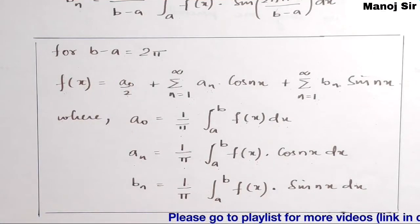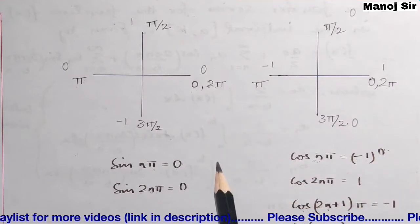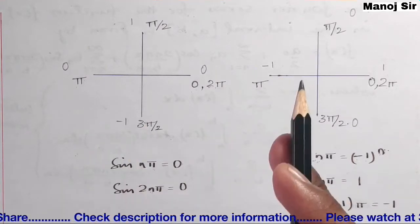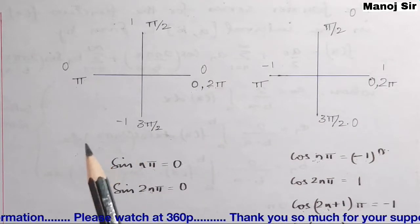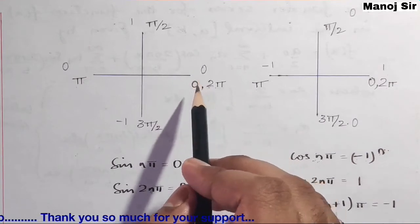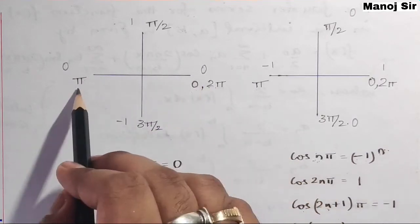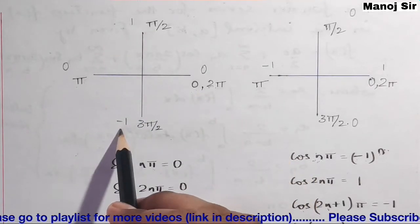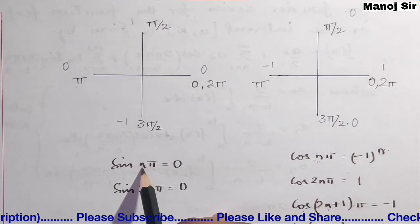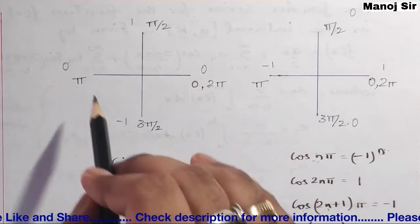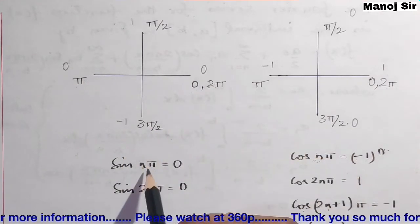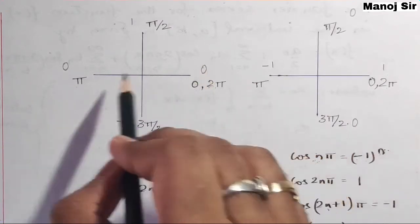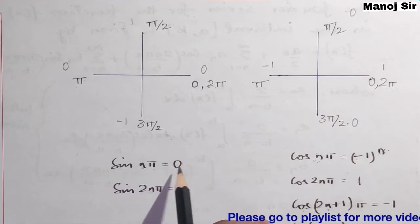Now let us discuss some standard results. First: sin(nπ) = 0 and sin(2nπ) = 0, where n goes from 1 to infinity. Since sin(0)=0, sin(π)=0, sin(2π)=0, sin(3π)=0, and so on, for any natural number n the values nπ and 2nπ always land on zeros of the sine function.